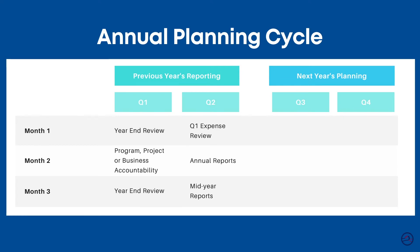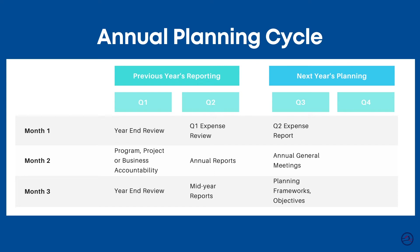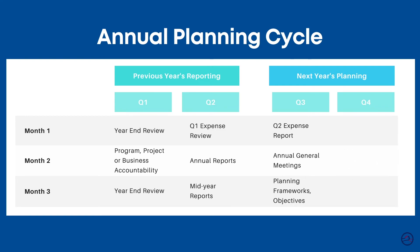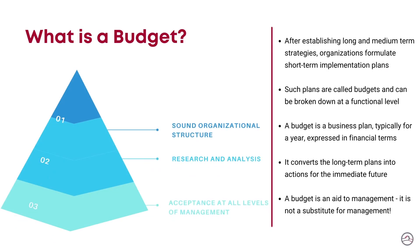In the third quarter, we start thinking about the next year. We still do our quarterly analysis, but the focus changes to thinking ahead. At the annual general meetings, we present results of the previous year, but also take feedback that gets incorporated into the planning frameworks for the upcoming year. In the final quarter, we put our minds to next year's plan by prioritizing needs, understanding revenues and preparing preliminary budgets, and confirming revenues, appropriating it, and preparing final budgets. Budgets represent the primary method of communicating agreed-upon objectives throughout the organization.